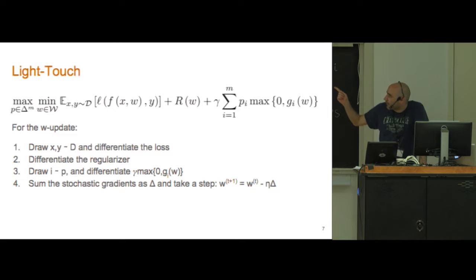When we're finding the constraint to take a step with respect to, we're going to sample a single index according to this distribution and then differentiate the corresponding constraint. Because we're sampling according to p, the resulting stochastic gradient will be an expectation, a gradient of that third term there. Then we'll sum the gradients and take a step.